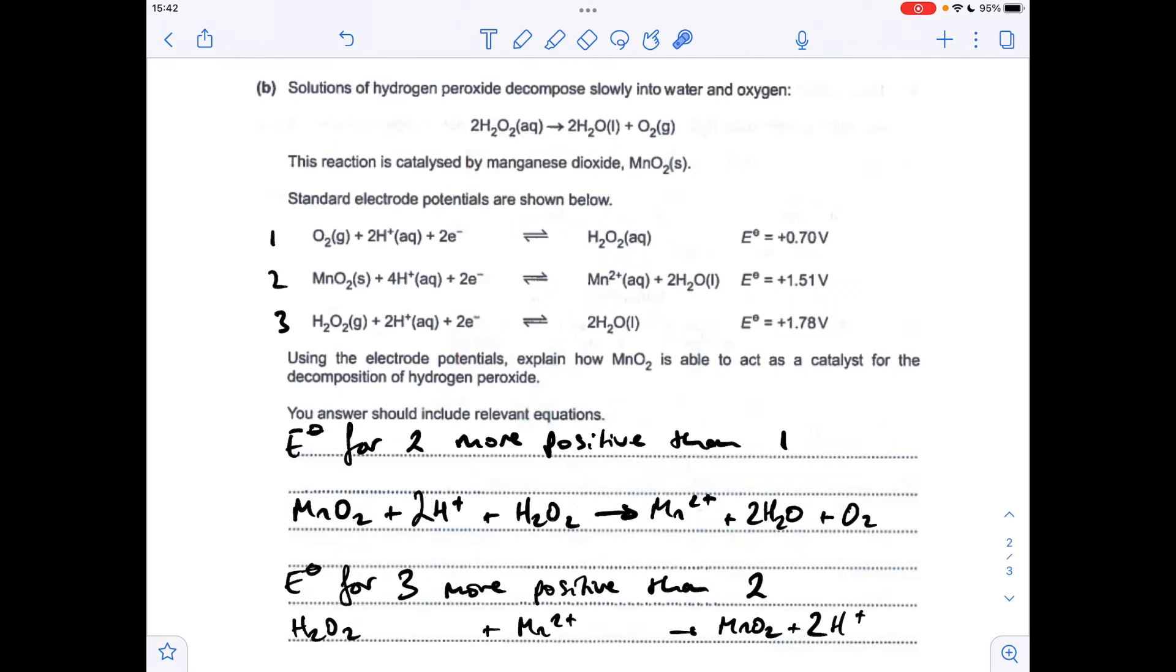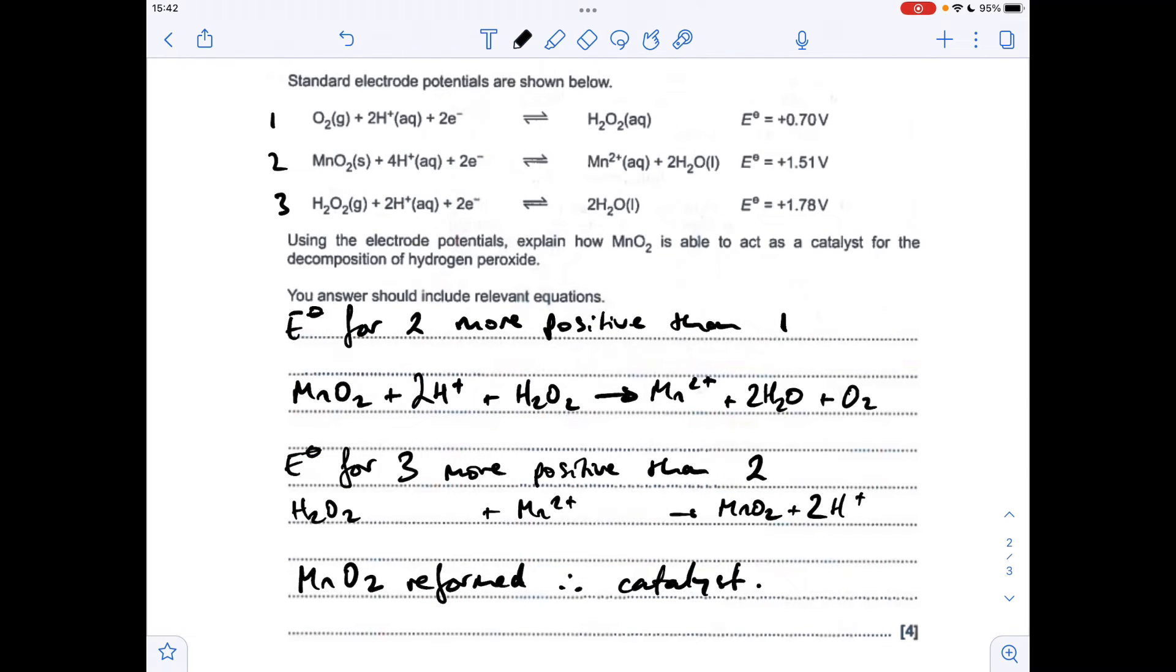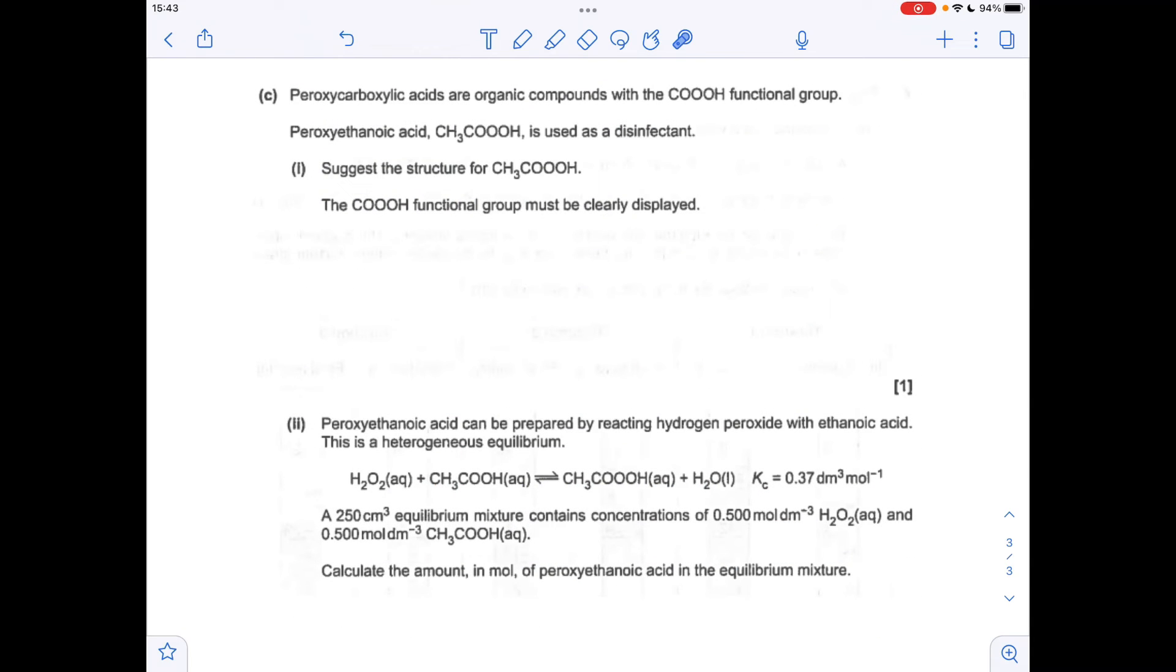We get that. You can see that the MnO₂ has been reformed. So it's acting as a catalyst. Moving on to part C now, we've got a little bit of organic chemistry and then it moves into equilibrium.